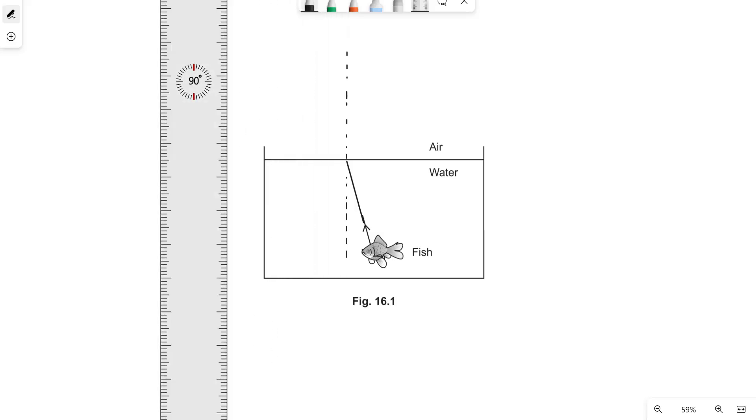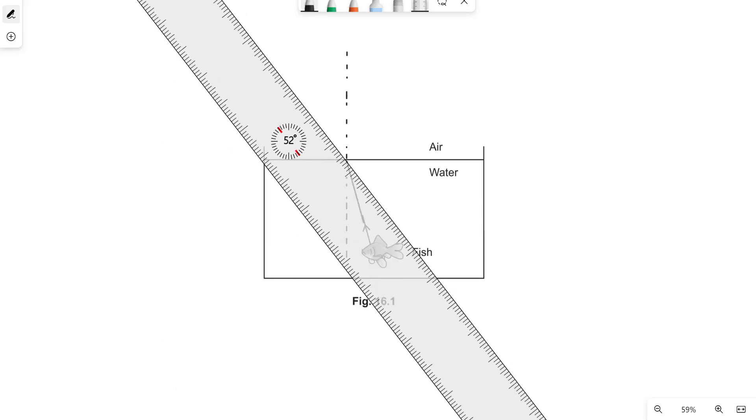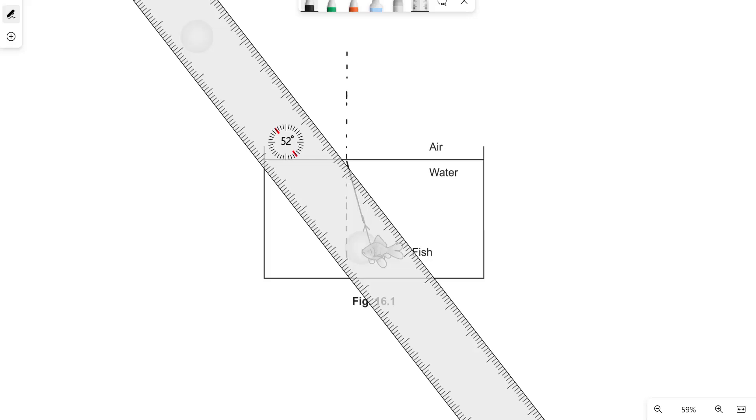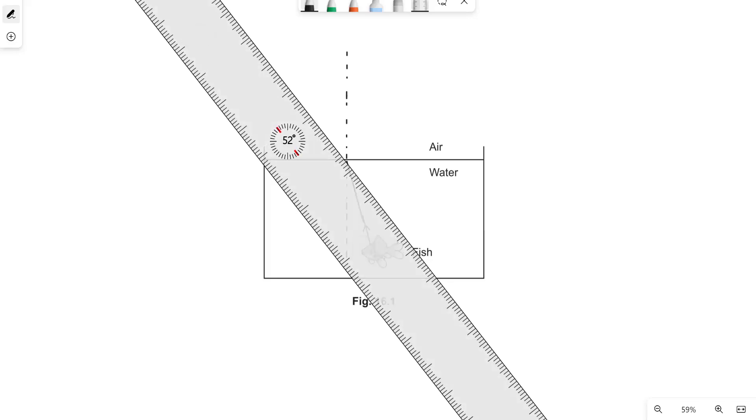Now because we're going into a less optically dense medium with a low refractive index then this thing will bend away from normal and will kind of look like this.